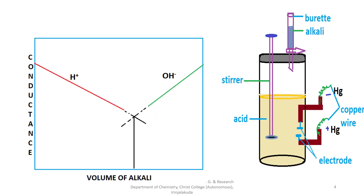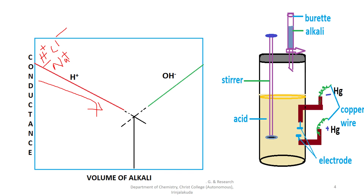The plot of conductance against the volume of alkali for such a strong acid-strong base titration shows: HCl is taken in the titration cell and NaOH is added from the burette. HCl is ionized as H+ and Cl- ions. Upon addition of NaOH, the H+ ion is replaced by Na+ ions, so the conductance decreases as the volume of alkali increases.